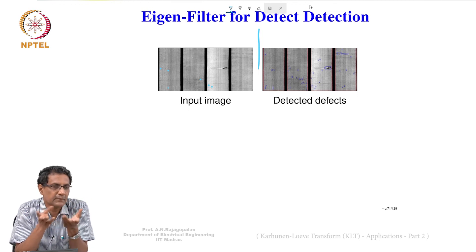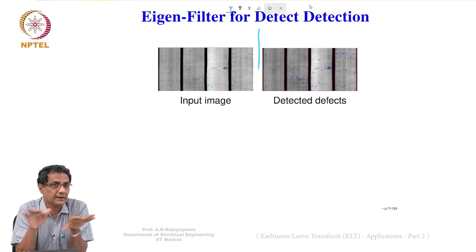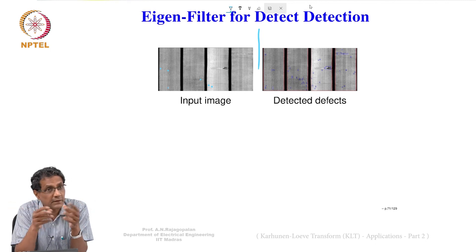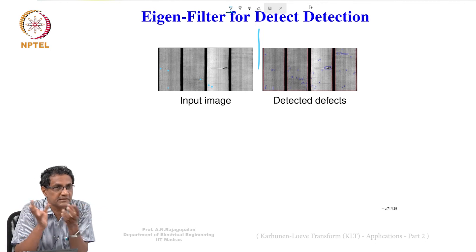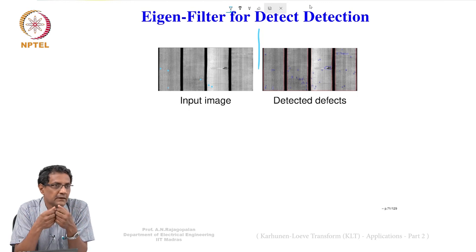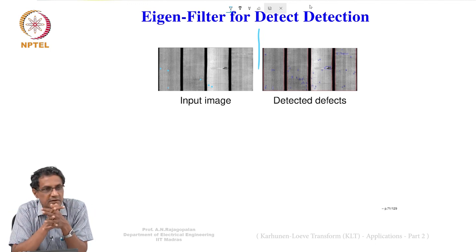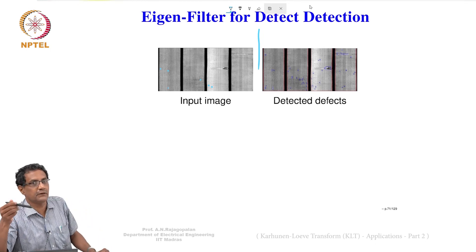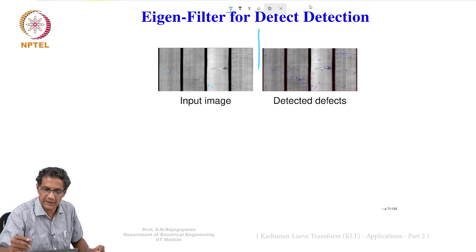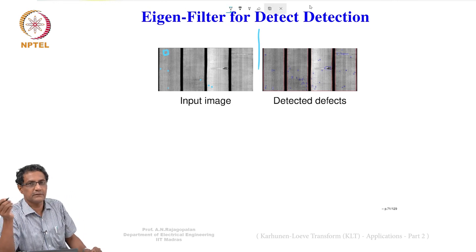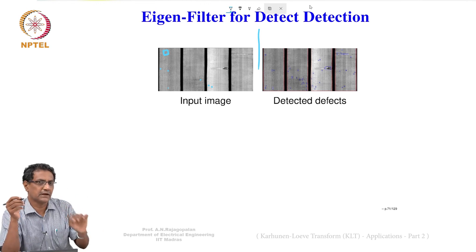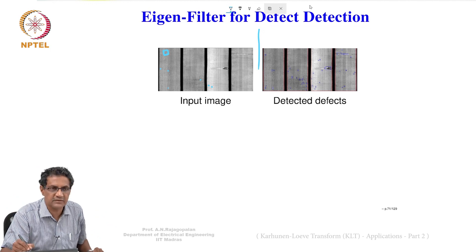We tried edge detection and thresholding, but setting the threshold too low flags non-defects, and setting it too tight causes you to miss actual defects — which is very expensive. So what we did was: we looked at regions the client had already marked as defective. We take small patches, say 16x16, around those regions, and also go through clean regions in another image, collecting clean patches.